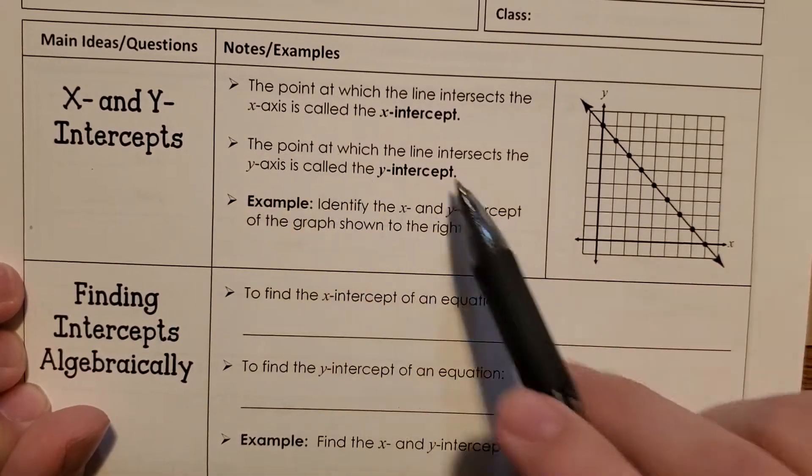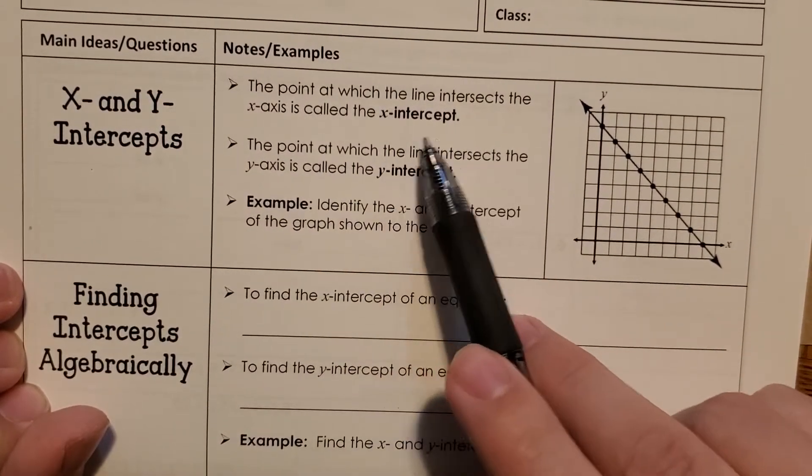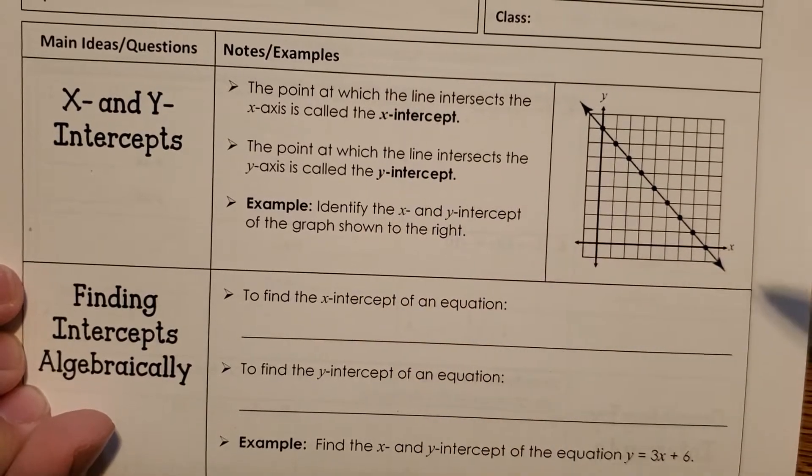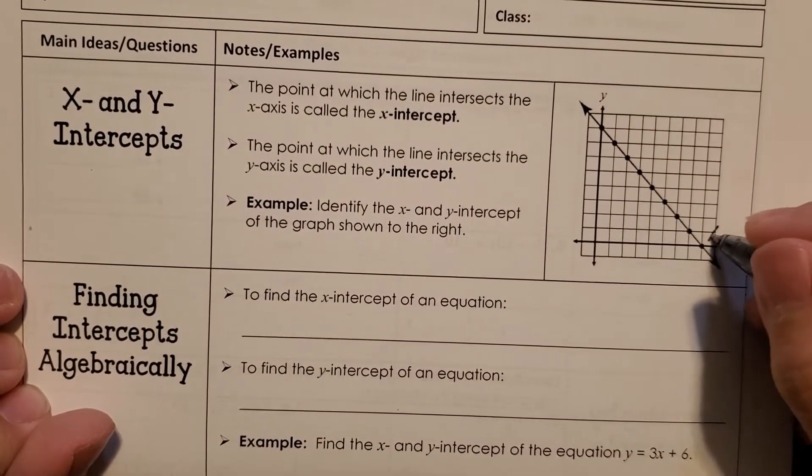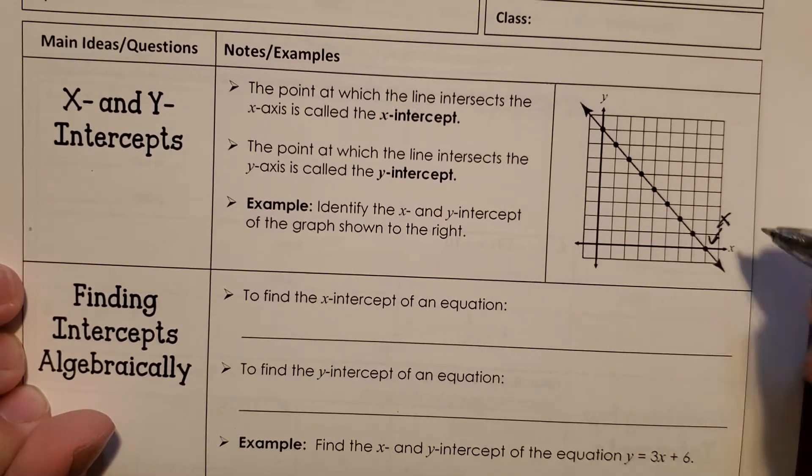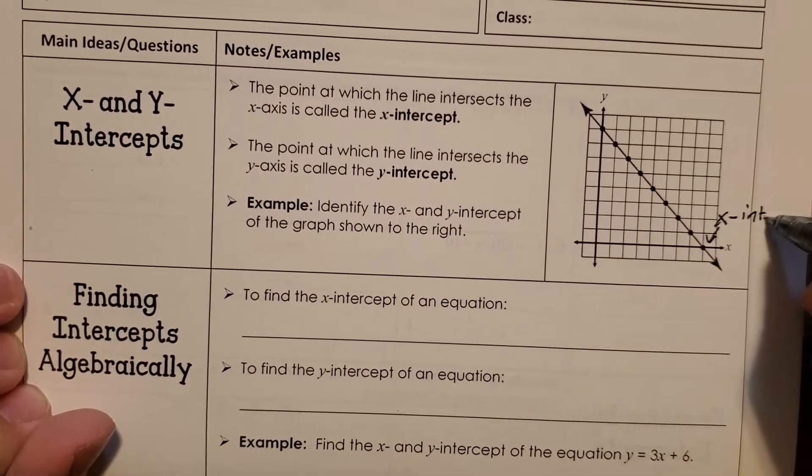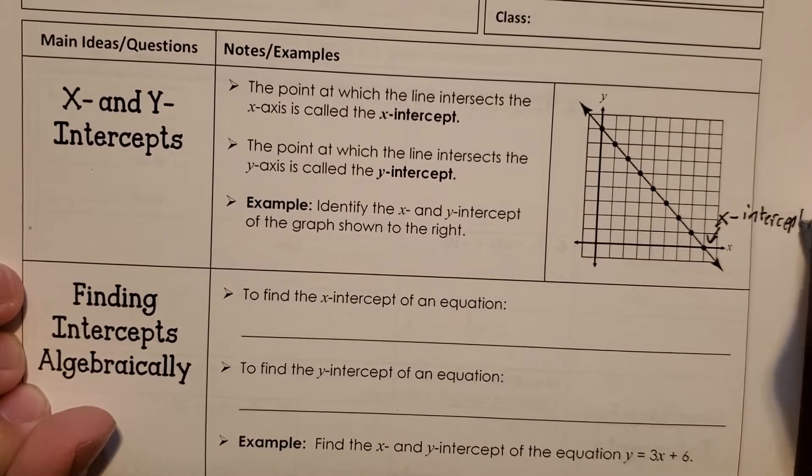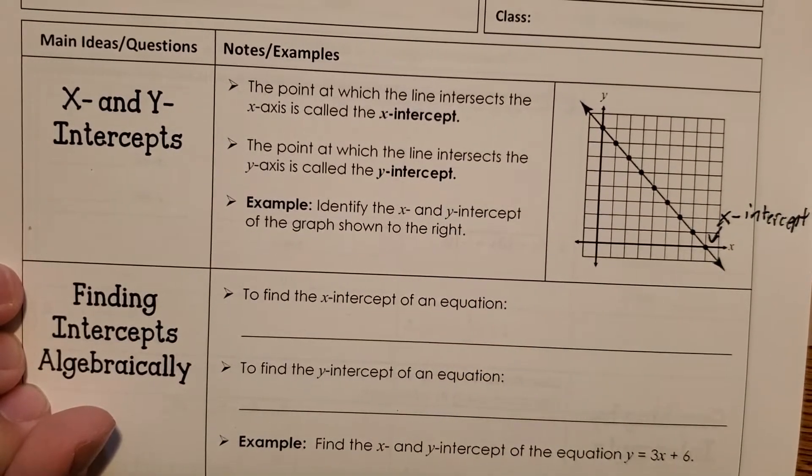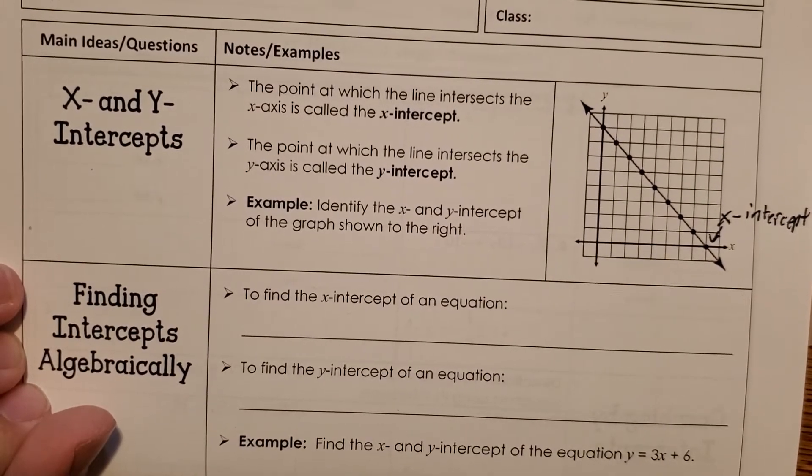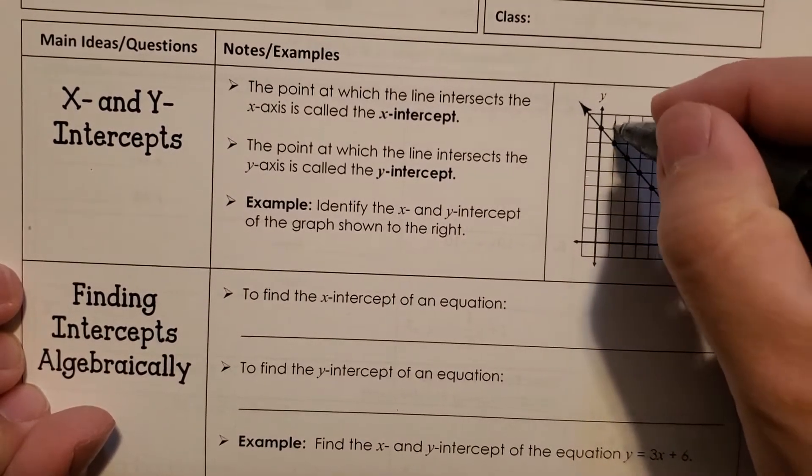The point at which the line intersects the x-axis is called the x-intercept. So on this graph, that would be right here. And the point at which the line intersects the y-axis is called the y-intercept, which is the point here.